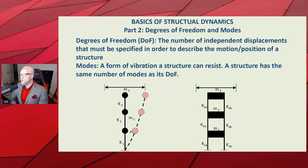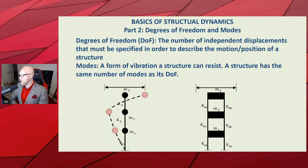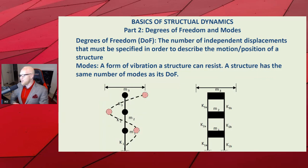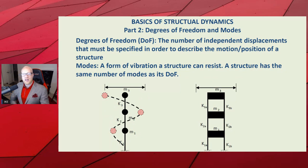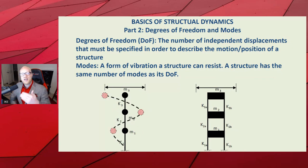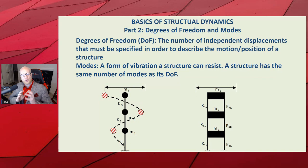The first kind of mode this three degree of freedom structure can take is everything moving together — left and right, left and right. Another mode is the first two floors going one way while the third floor goes the other way. A third mode is: bottom floor goes left, middle floor goes right, top floor goes left — everything alternates and snakes like a shimmy. We begin to understand what we mean when we say modes are the shapes, the kinds of dances, that a particular structure can perform.